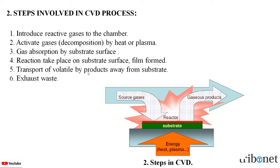Fifth step: transport of the volatile byproducts away from the substrate. Sixth step: the exhaust of waste. In this figure we can see the steps involved in the CVD process, where the source gas is introduced, then decomposition of the gas occurs, followed by deposition of the desired material on the substrate forming a film, and then transportation of volatile byproducts away from the substrate and exhaustion of the waste.